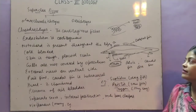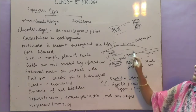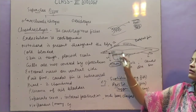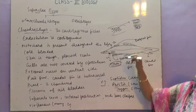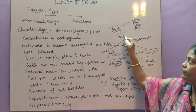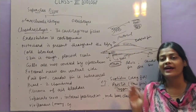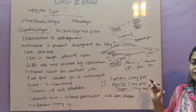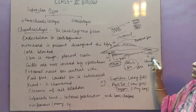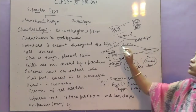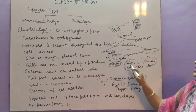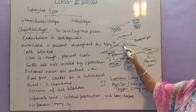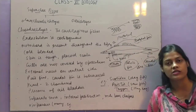Paired fins are present. There is a dorsal fin, pelvic fin, and pectoral fin. The fin near the mouth or head region is called the pectoral fin. The fins near the trunk region are called pelvic fins. The fin near the tail region is called the caudal fin. The fins in between at the dorsal side are called dorsal fins, and they are paired.